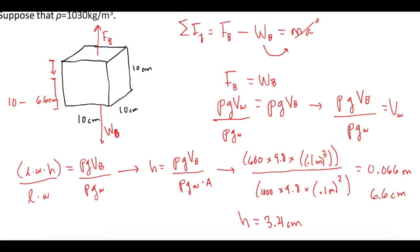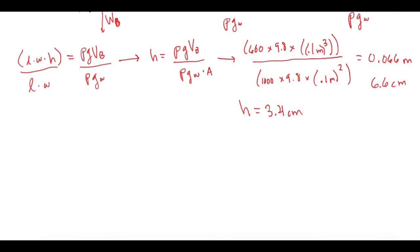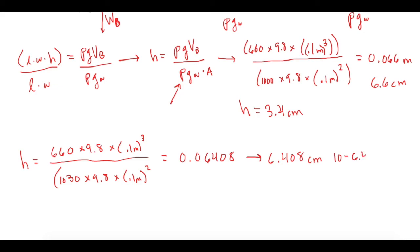They tell us, what does it change if we add it in salt water instead of fresh water? Now all we're going to do is change the ρ of the salt water. Now we have 660 for the block, that hasn't changed, times 9.8, times 0.1 meters cubed, all divided by 1030 for the density of salt water, times 9.8, times 0.1 meter squared, which gives us 0.06408. So from the bottom of the block, it's going to come up 6.408 centimeters.